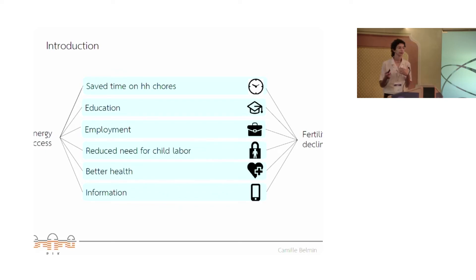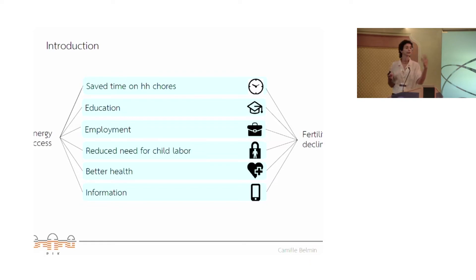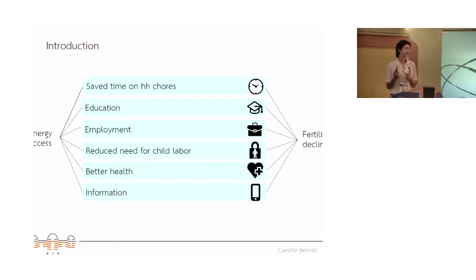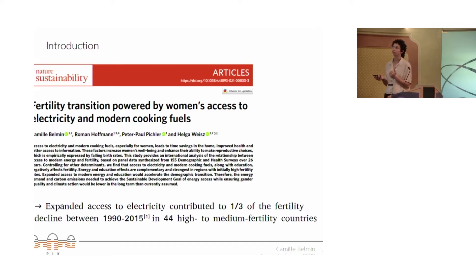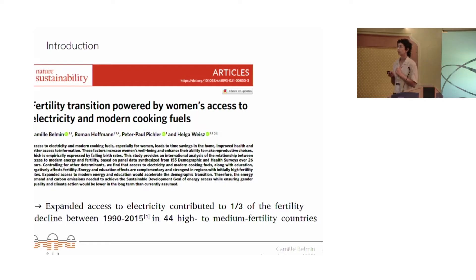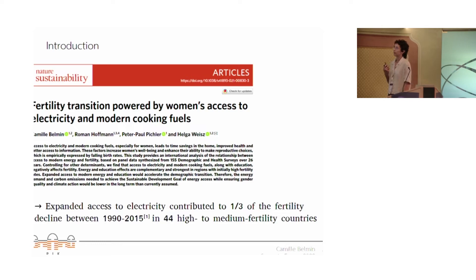Recent research has shown that energy access in low-income countries has an effect on fertility. When you do not have access to modern energy and rely on traditional wood, it is a huge burden falling generally on women and children for household chores. Switching to modern energy lowers this burden. Energy access also enables access to education, employment, reduced needs for child labor, improved health and information — all factors known to lead to fertility decline. We found that, after controlling for other known determinants like education, expanded access to electricity contributed to about a third of the fertility decline between 1990 and 2015 in 44 high to medium fertility countries.